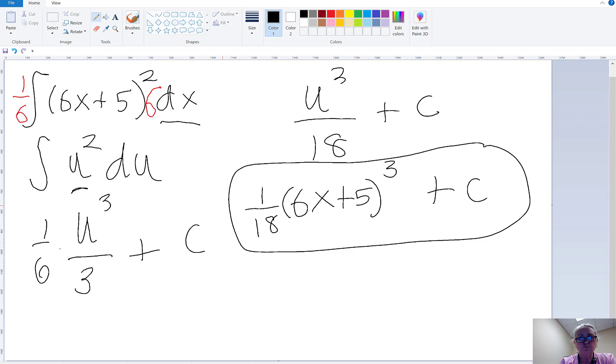So remember, what we've done is we've found the original function for which a derivative was taken, and that derivative was (6x + 5) squared. That's what we're saying the derivative was. So let's take the derivative of this and see if that is, in fact, what the derivative is.